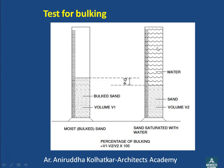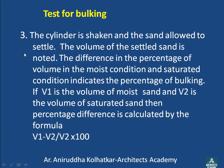Then add water and completely saturate the sand - shake the cylinder so the sand is totally saturated with water. When the sand becomes saturated, the film around the particles disappears and the sand returns to its original dry volume. Measure this new volume V2 in the same way - height multiplied by area of the circle. Calculate the difference in volumes and the percentage difference. The difference between the volume in the moist condition and the saturated condition indicates the percentage of bulking, using the formula: (V1 − V2) / V2 × 100.